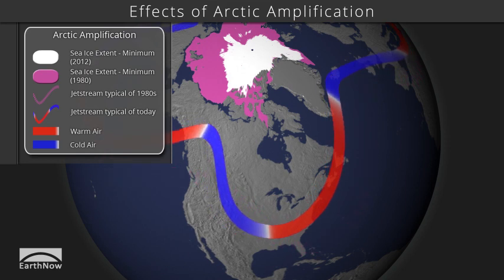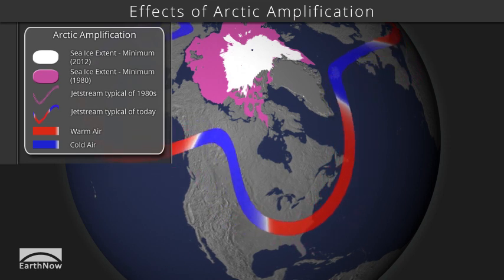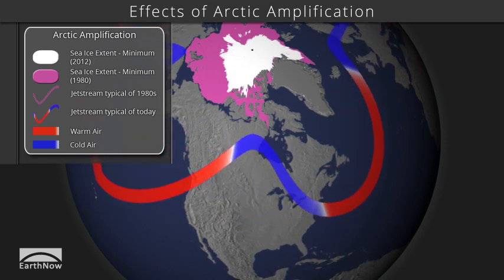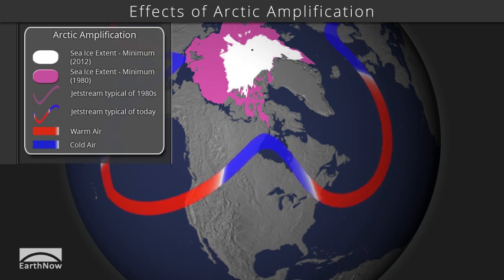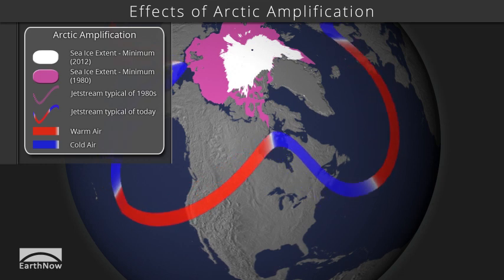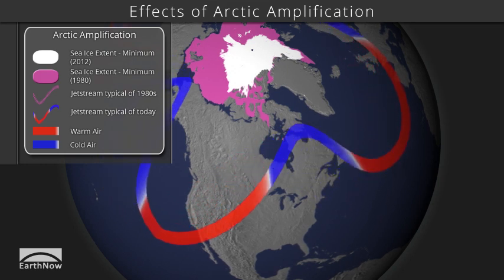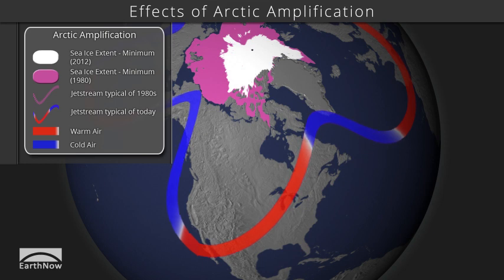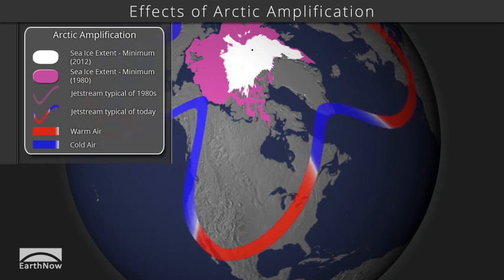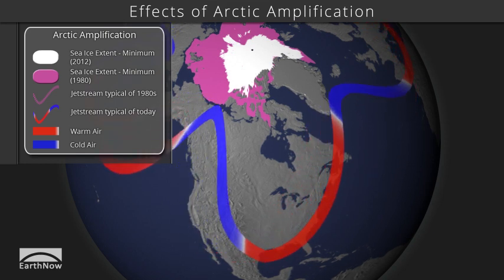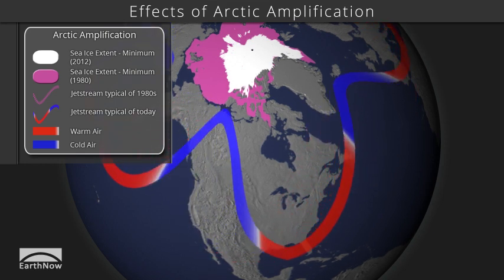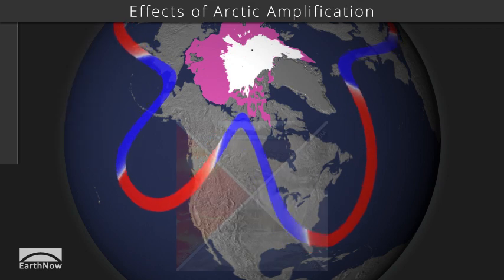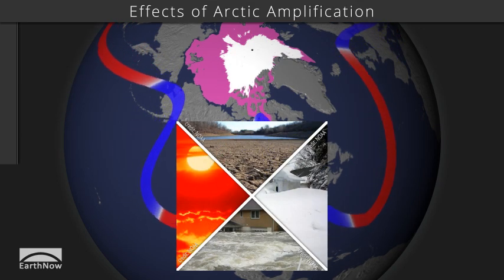Scientists have observed that the reduced temperature difference between the North Pole and the tropics is associated with slower west-to-east jet stream movement, and a greater north-south dip in its path. This pattern causes storms to stall and intensify, rather than move away as they normally used to do.